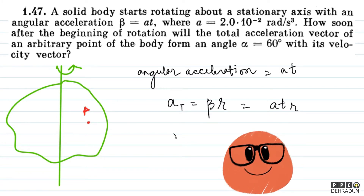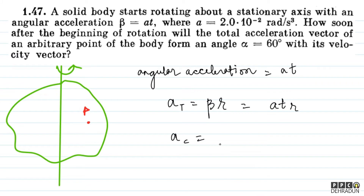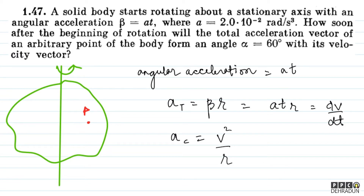Now we know centripetal acceleration is v²/R. We know that a_tangential is dv/dt. This gives us v, which we can use in the centripetal acceleration. So the strategy is: first find v as a function of time.